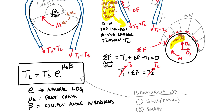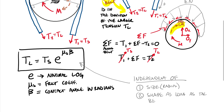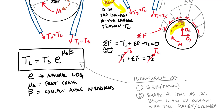There is a small modification: the equation is independent of shape as long as the belt stays in contact with the pulley or cylinder. You can't wrap around a sharp corner because no belt is flexible enough to do that.